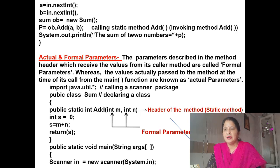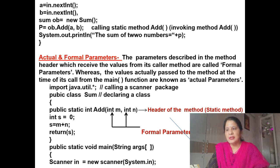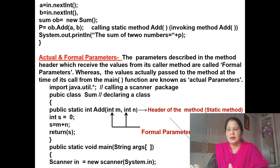Here I am explaining in the program what is the actual parameter and what is the formal parameter. We write 'import java.util', 'public class sum', then 'public static int add(int m, int n)'. Int m and int n — these are the formal parameters, which are declared in the header of the static method. That is known as the formal parameter.